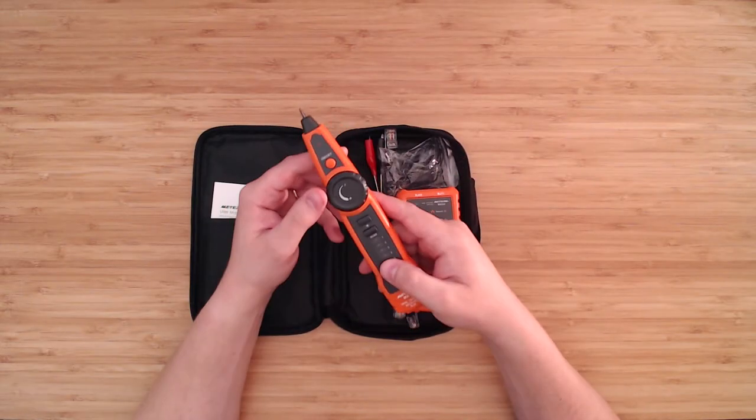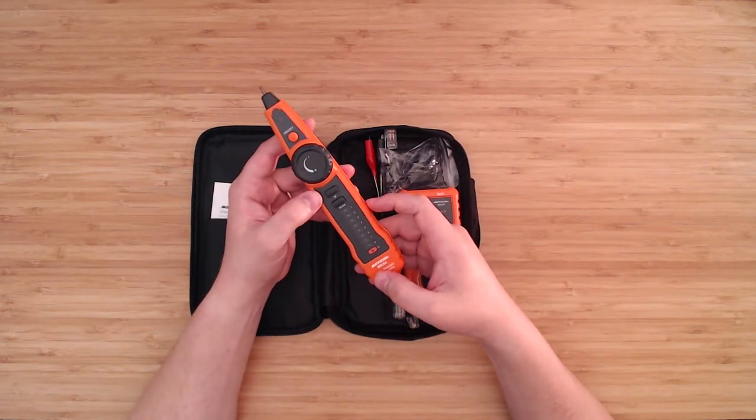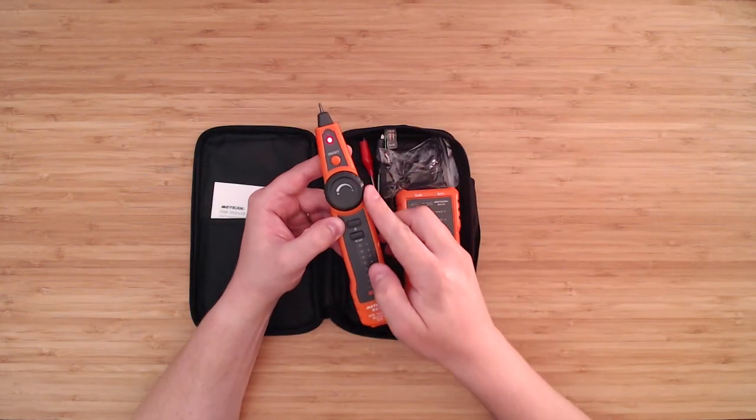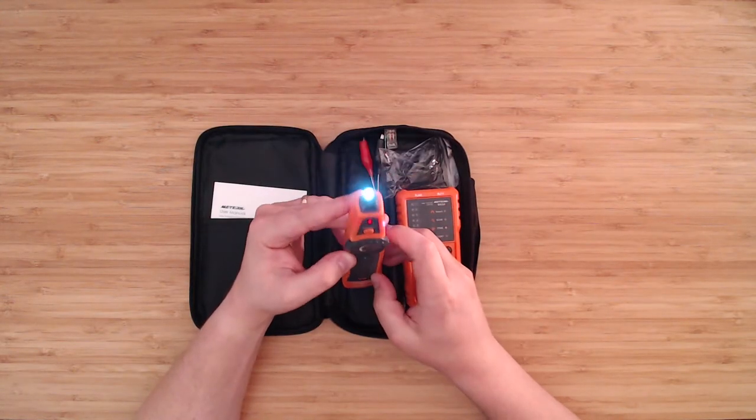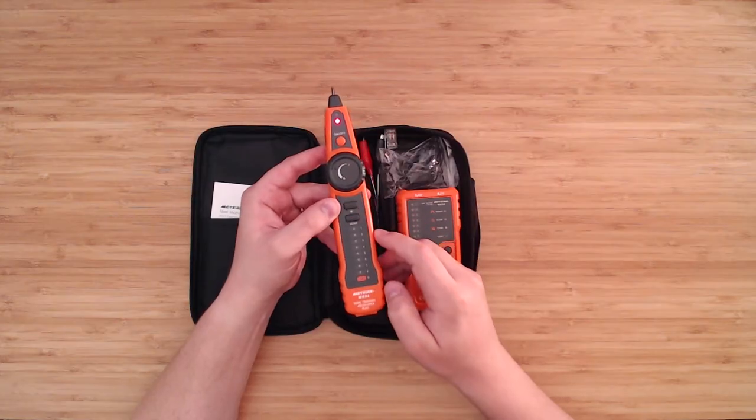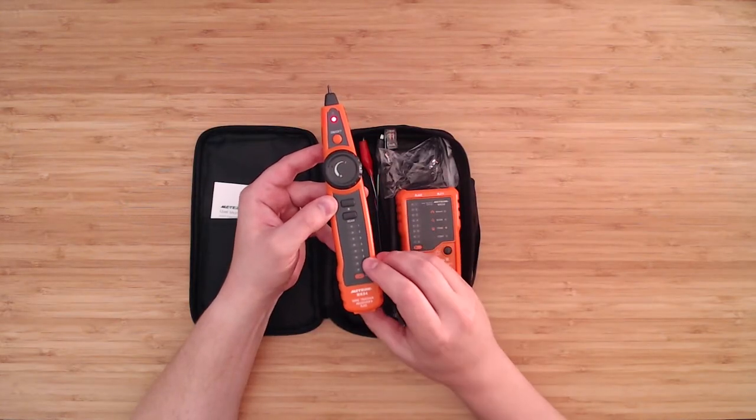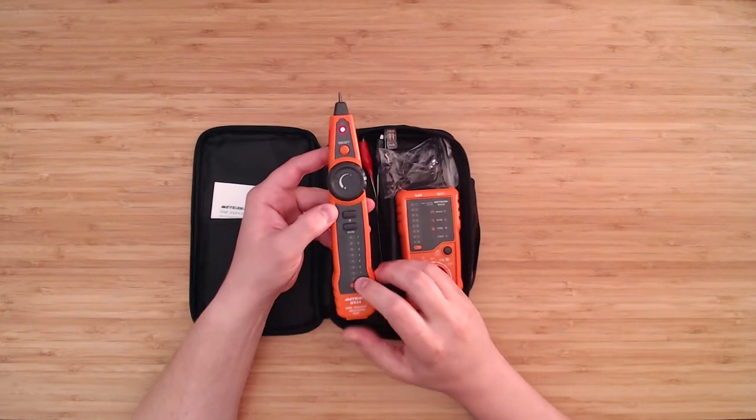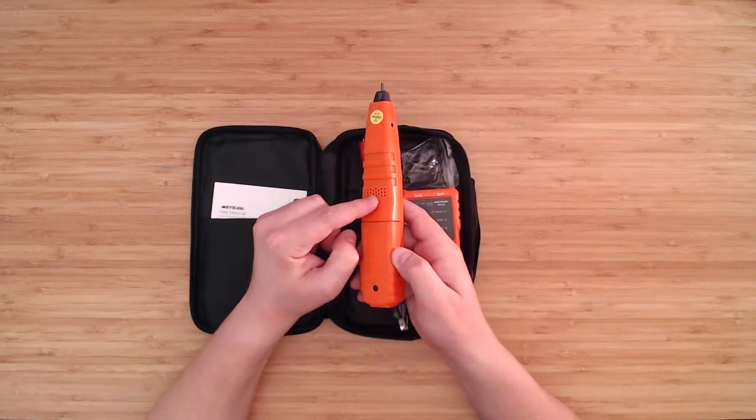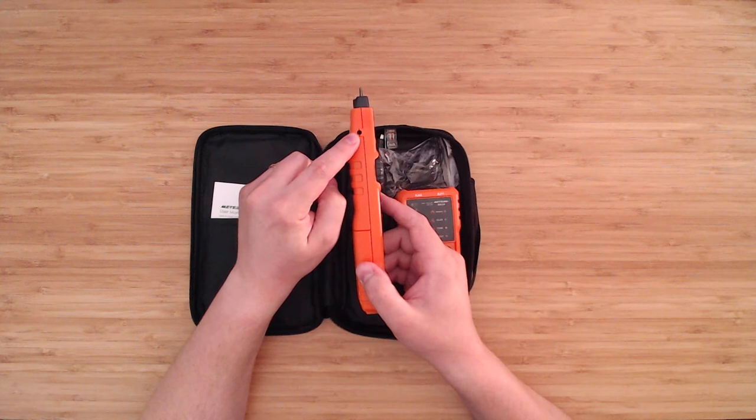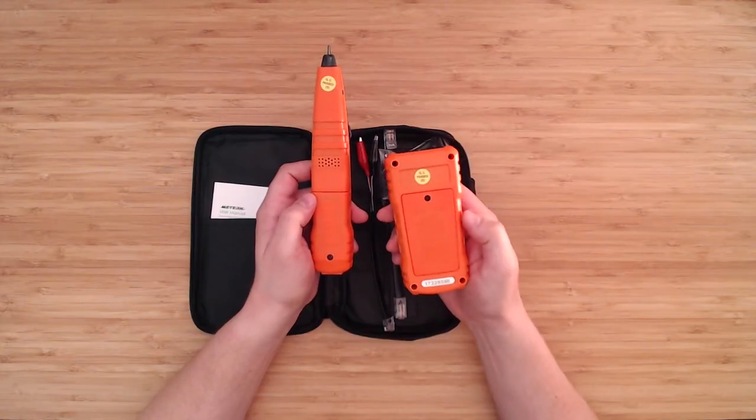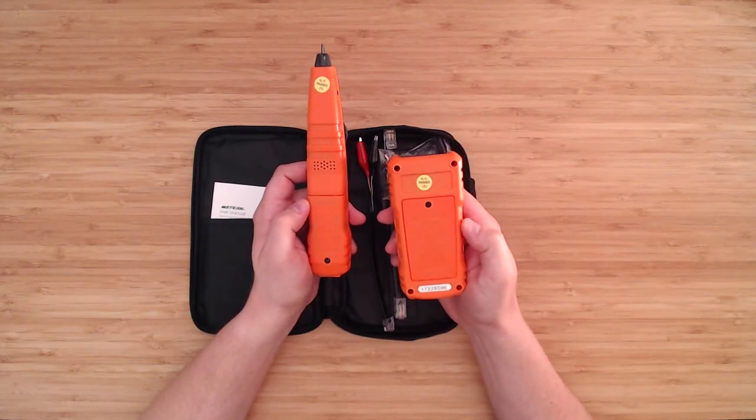Then we have the probe and remote. We have the on-off button there at the top, the volume dial, the LED on-off button, the scan button, the diagnostic LEDs, and the RJ45 jack. On the back we have the speaker and the 2.5 millimeter headphone jack here at the side, and included both in the remote and the tester is a 9 volt battery pre-installed.